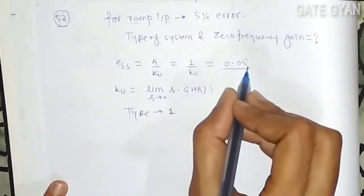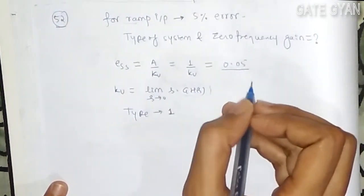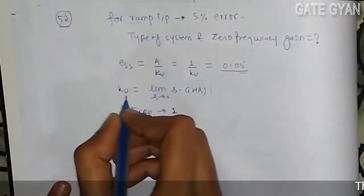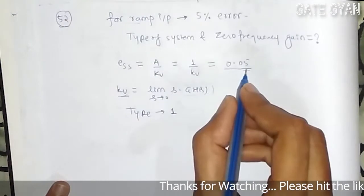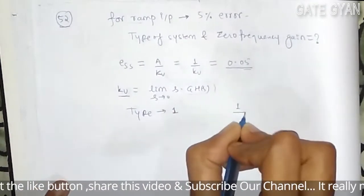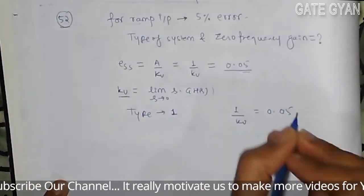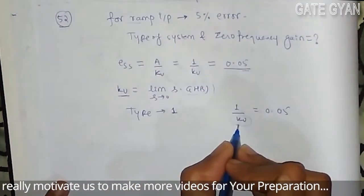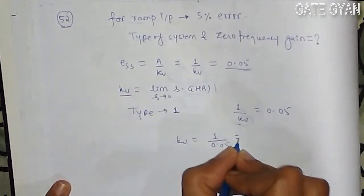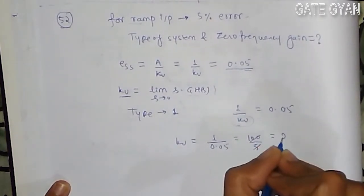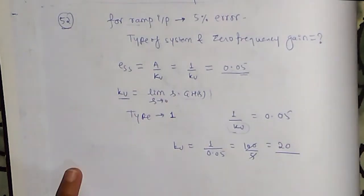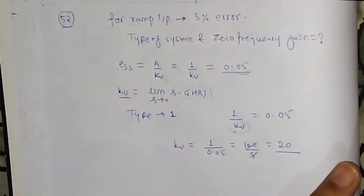We have ESS is 0.05 that is finite value and now to get this zero frequency gain we have to find this value of Kv. So 1 upon Kv is equal to 0.05. So this Kv is nothing but zero frequency gain. So Kv is going to be 1 upon 0.05, 100 by 5 that is going to be 20. So zero frequency gain is 20 and the type of the system is going to be 1. Thank you.